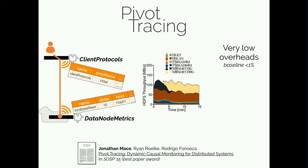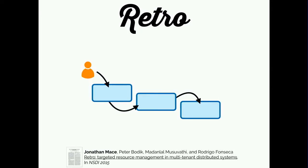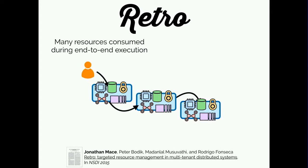Now I'm going to present a second tool — it's very different to Pivot Tracing. It's called Retro, which stands for resource tracing, and it looks at computational resources along this cross-cutting dimension.